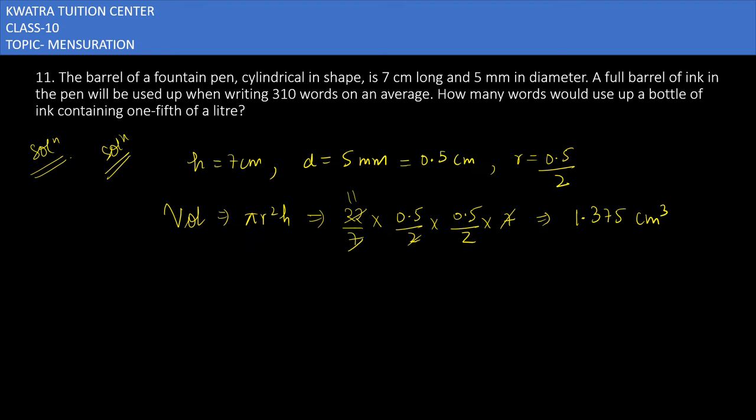in the bottle is equal to one-fifth of a liter. One liter gives you 1000 ml, so one-fifth will be 200 ml. This is 200 ml. Then they are asking how many words can be written.